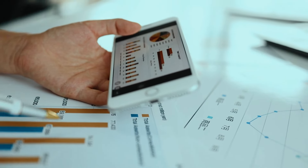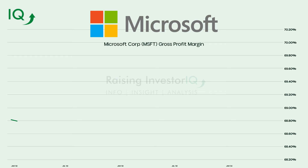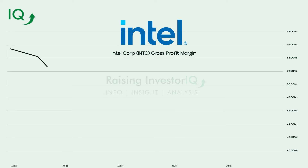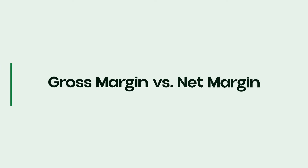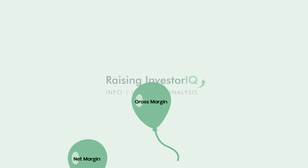By analyzing gross margin trends over several years, you can also make better predictions about the company's future outlook. If a company has successfully expanded its gross margin through cost-cutting measures or by introducing higher-margin products, this could indicate strong future performance. Alternatively, if margins are shrinking despite increased sales, it could be an early warning sign that profitability may come under pressure.